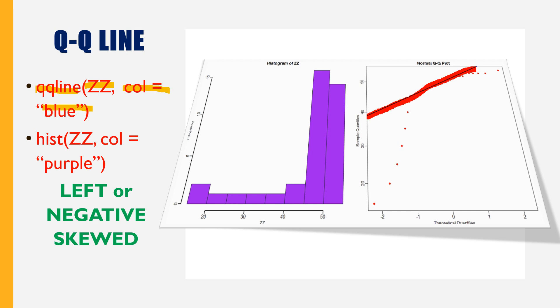Also we have drawn a histogram of the same data set. Histogram ZZ, color equals purple. As you can see, left or negative skewed points inside the graph. The points are nearly making a curve. Also if we observe the histogram, we can see higher values are more frequent.